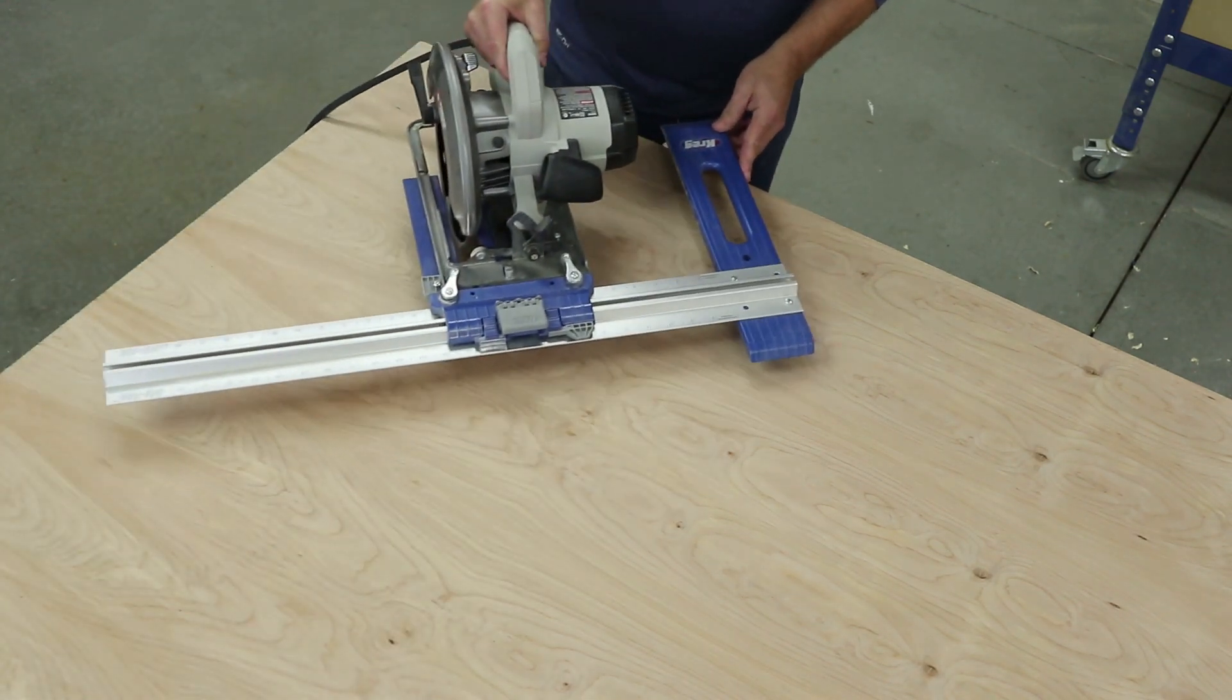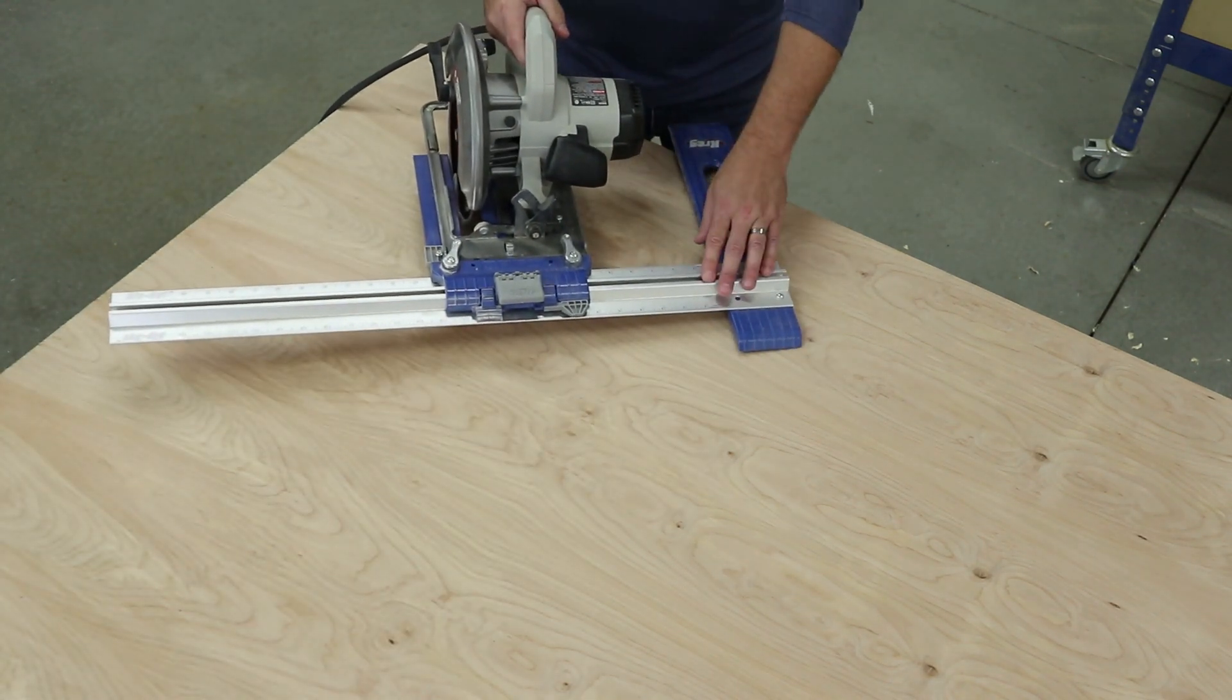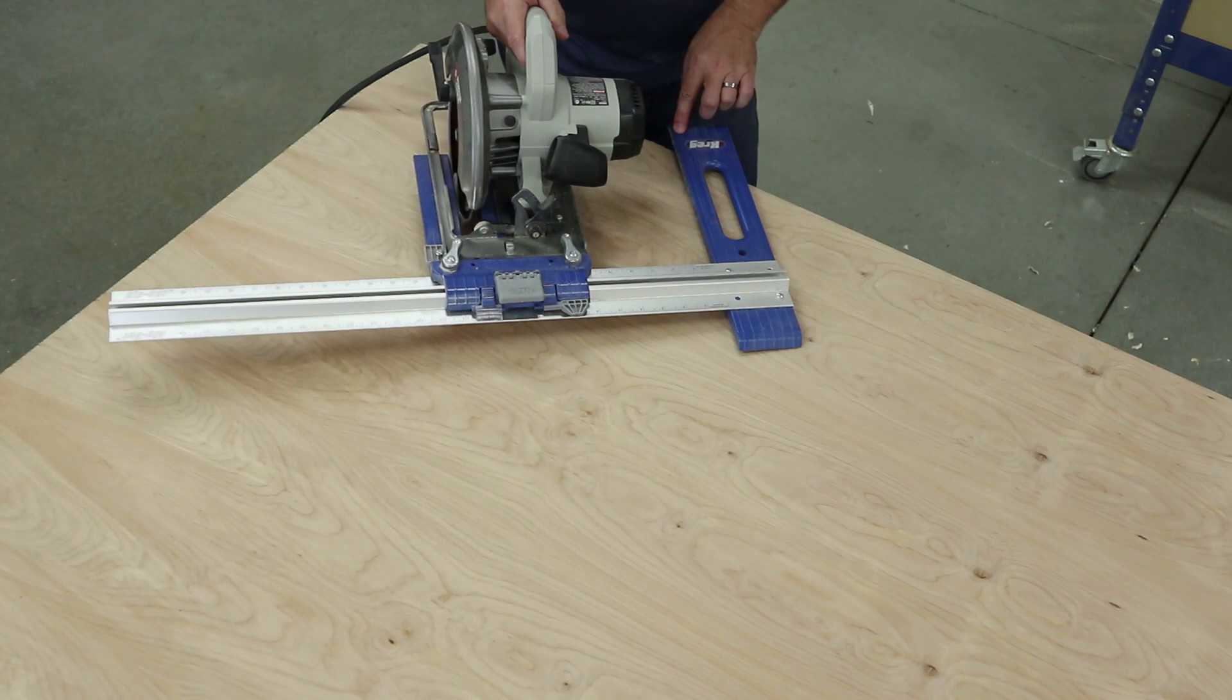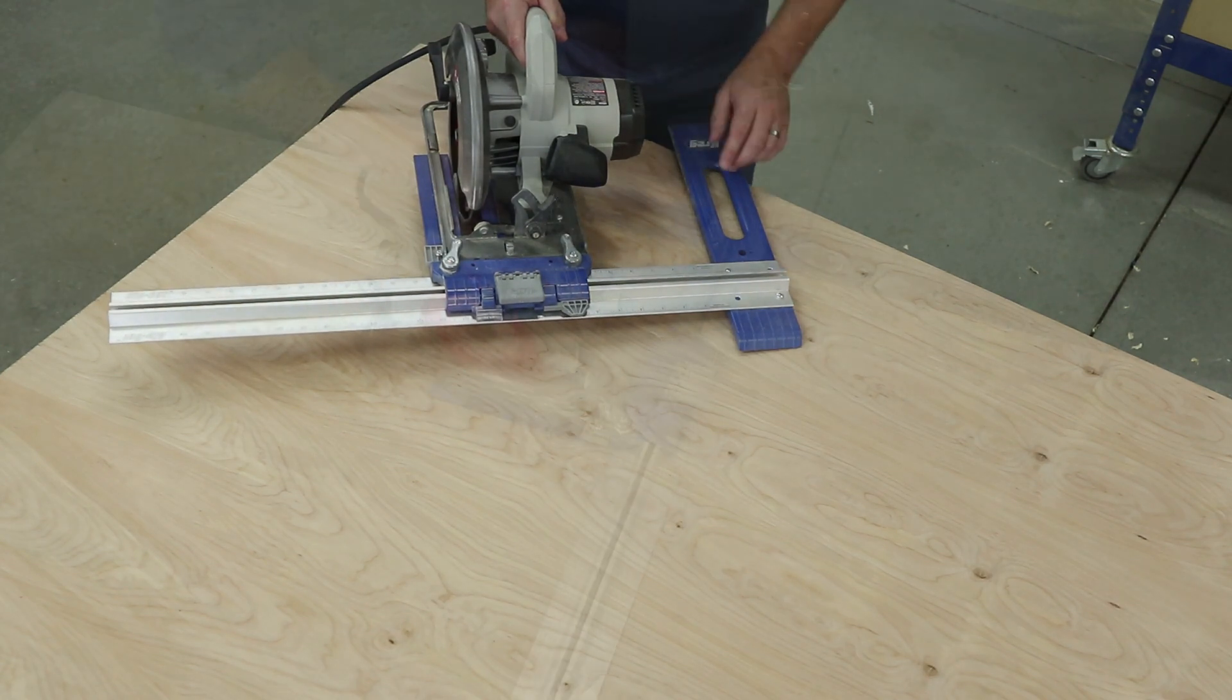This guide is the Craig Ripcut. It has a long guide that follows the edge of your sheet. You can just lock in the cutting width you want and then guide the saw along to make your cut.